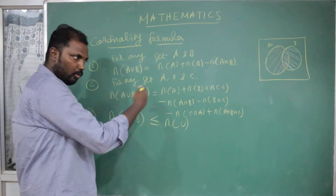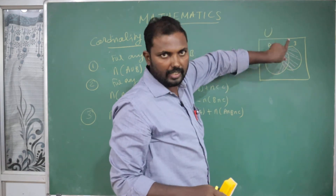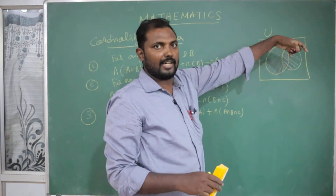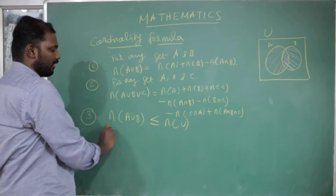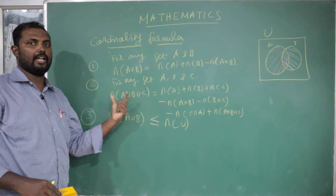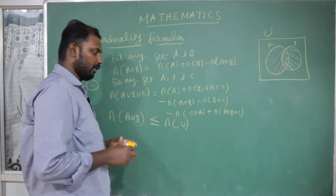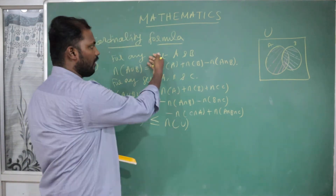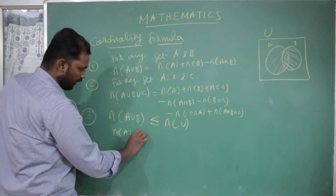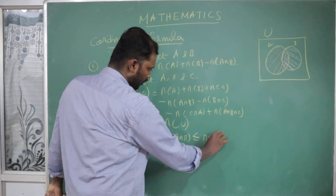If A union B is not equal to U, it will not equal N of U. As you can see in this example, this is U and this is A and B. Now A union B is less than U, so U is a superset. In this case, N of A plus N of B minus N of A intersection B is less than or equal to N of U.